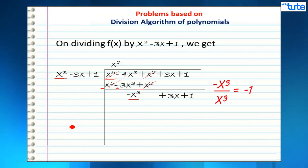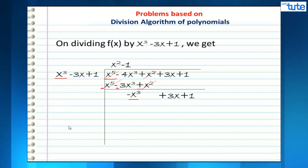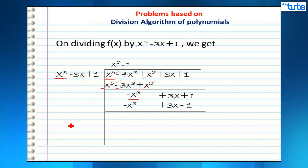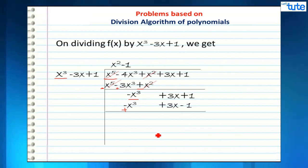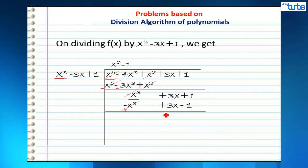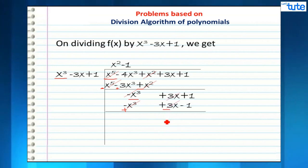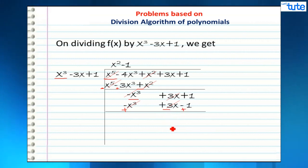Dividing -x³ by x³ gives -1, the second term of the quotient. Multiplying -1 by x³ - 3x + 1 gives -x³ + 3x - 1. Subtracting: -x³ + x³ = 0, 3x - 3x = 0, and -1 becomes +1, so 1 + 1 = 2. The remainder is 2.